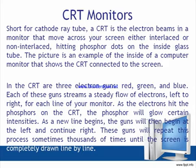CRT monitors — short for Cathode Ray Tube. A CRT uses electron beams in a monitor that move across your screen, either interlaced or non-interlaced, hitting phosphor dots on the inside glass tube. In the CRT are three electron guns — red, green, and blue — each of which streams a steady flow of electrons left to right for each line of your monitor.